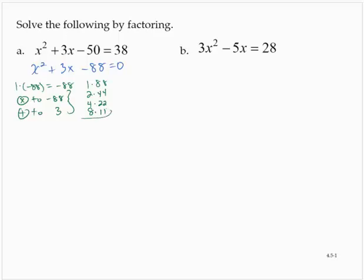8 and 11 have a difference of 3. So I'll use a negative 8 and a positive 11. x squared minus 8x plus 11x minus 88 is equal to 0. Don't lose that equals 0, because it's now an equation that we are solving, where the goal is not factoring. Factoring is a process that helps us achieve our goal.